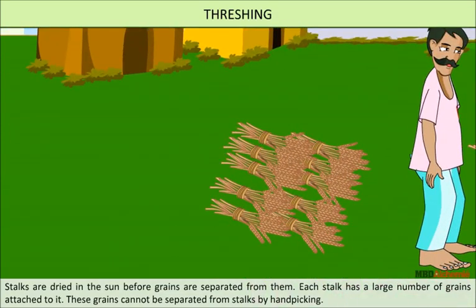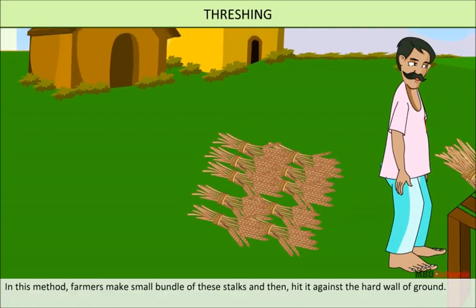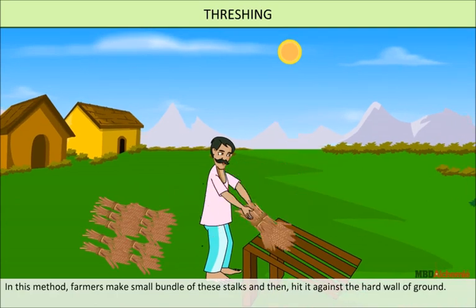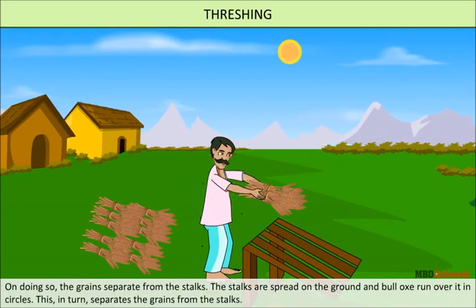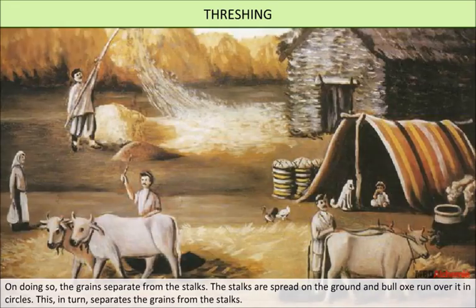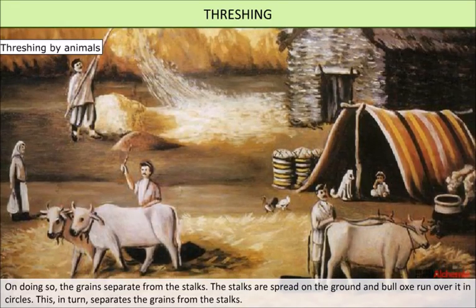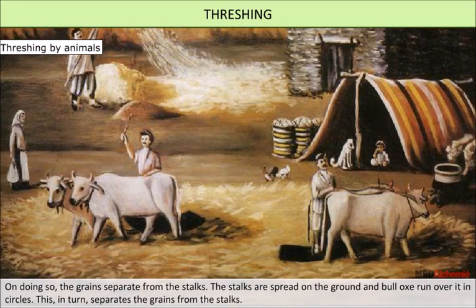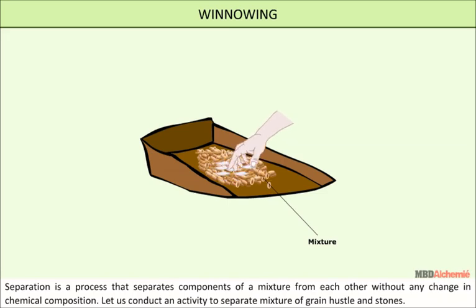Stalks are dried in the sun before grains are separated from them. Each stalk has a large number of grains attached to it. These grains cannot be separated from stalks by hand picking. In this method, farmers make small bundles of these stalks and hit them against a hard wall or ground. The grains separate from the stalks. The stalks are then spread on the ground and bullocks run over them in circles, which also separates the grains. Separation is a process that separates components of a mixture from each other without any change in chemical composition.